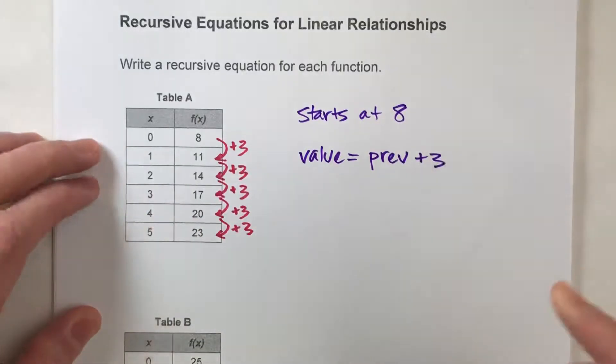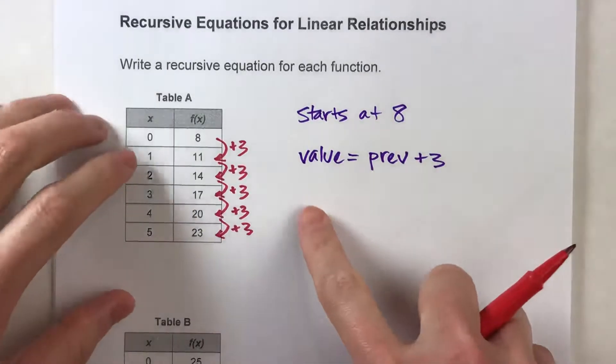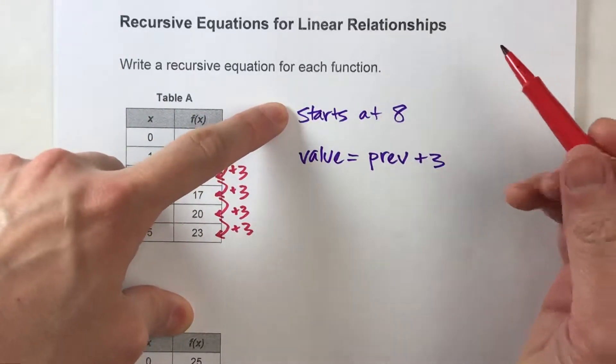For example, if you want the fifth value for f of x, so you want f of 5, we'd take the previous value, which is 20, add 3 to it, and we get f of 5. So now that we know what the description of the pattern is, let's write this in recursive equation form.